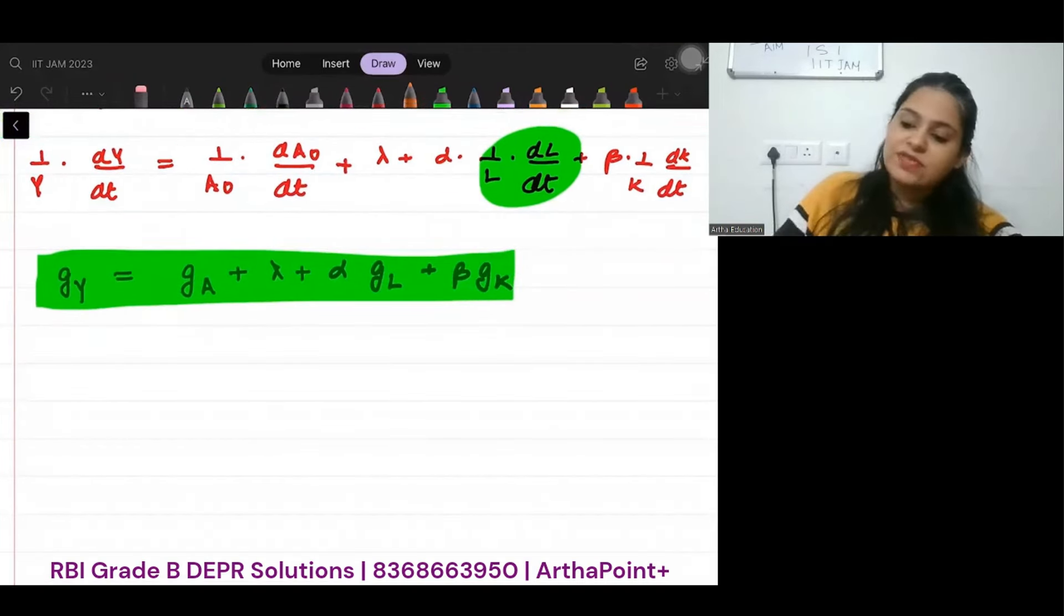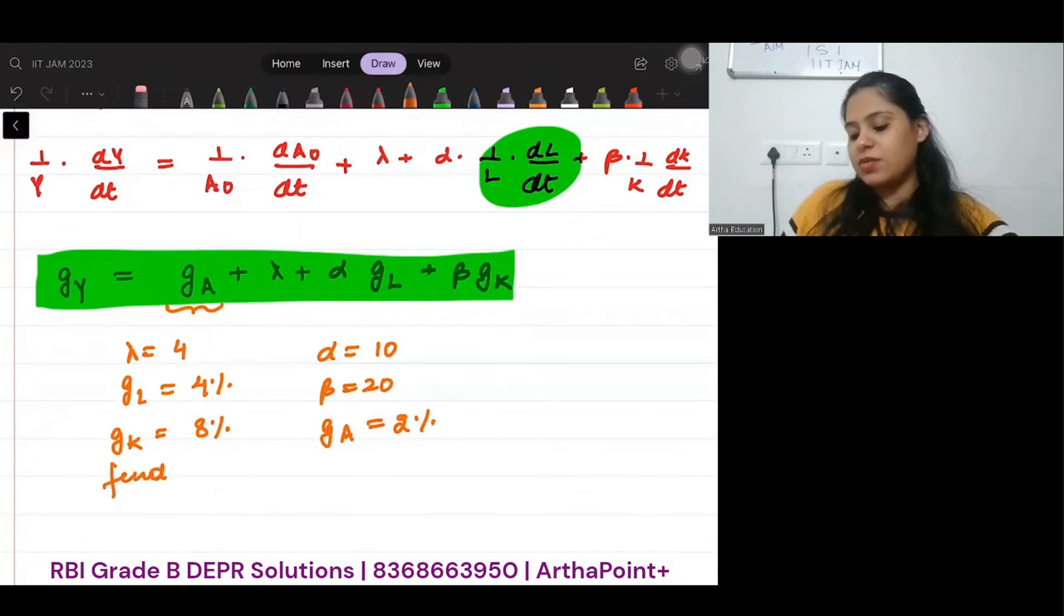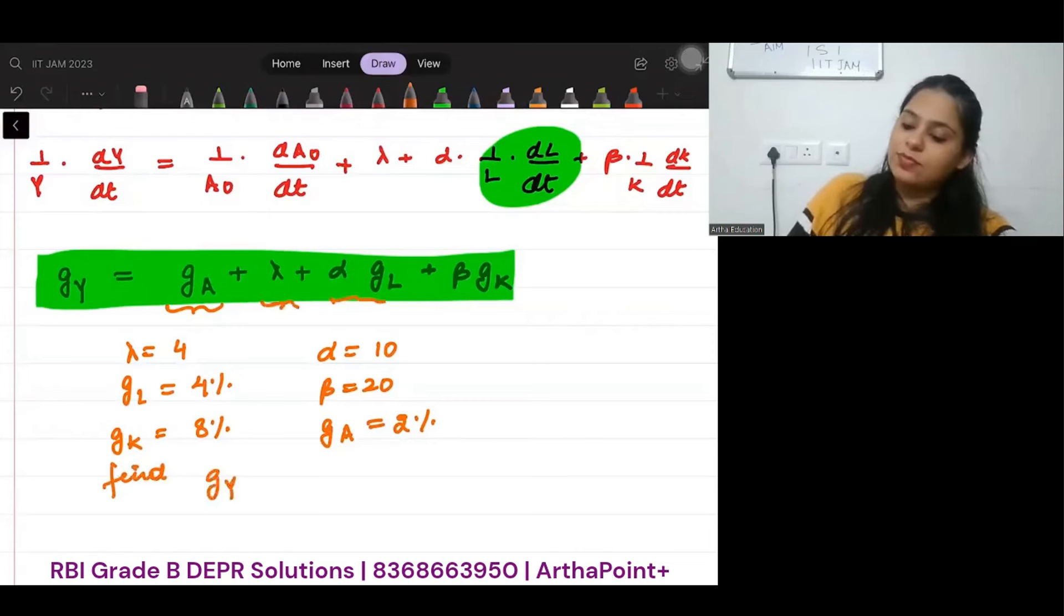So in the exam, if they tell you that λ is 4, growth rate of labor is 4%, growth rate of capital is 8%, α is 10, β is 20, growth rate of technology is 2%, then you should be able to find growth rate of output. So you can find growth rate of output also. Is this clear?